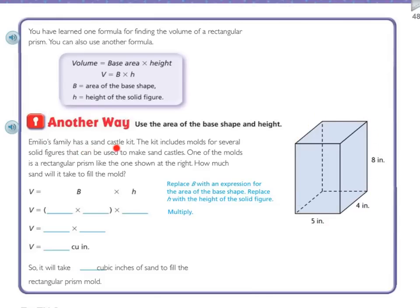So Emilio's family has a sandcastle kit. The kit includes molds for several solid figures that can be used to make sandcastles. One of the molds is a rectangular prism like the one shown on the right. How much sand will it take to fill the mold? So remember, volume equals the base times the height. So the base is right here. That's 5 times 4. And then the height is right here. That's 8 inches, right?